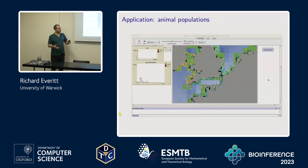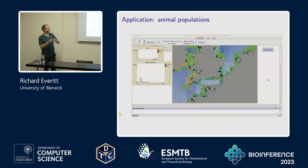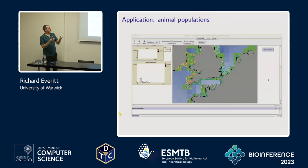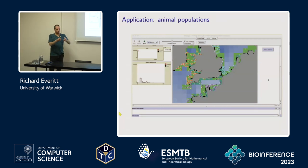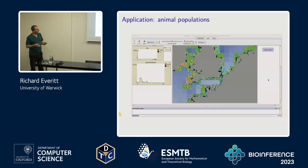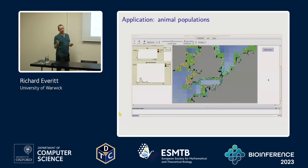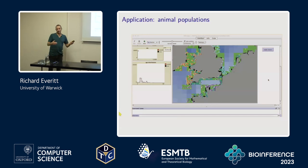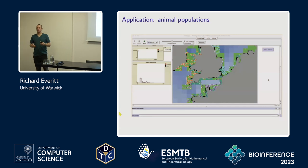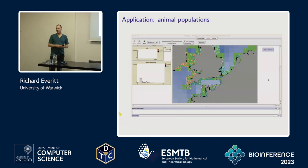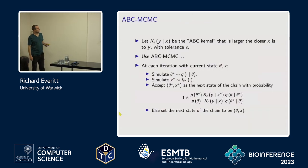Another model is an individual-based model for animal populations — this one models populations of fish. You're interested in parameters about how the fish interact, how they reproduce, and the rates of this. You model what individual fish or groups of fish do. All of these models have in common that they're quite easy to simulate but are quite complicated models. So your collaborator in life sciences might come to you and say, 'I can simulate from this model' — and what you can do is use ABC.